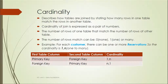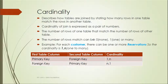Cardinality is an important aspect when designing universes. It describes how tables are joined by stating how many rows in one table match the rows in another table. It is expressed as a pair of numbers — one to many, many to one — and the number of matching rows can be zero, one, or many. For example, for each customer there can be one or more reservations, so the cardinality is one to many.